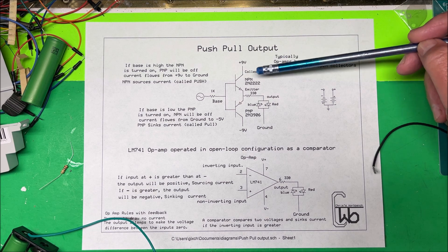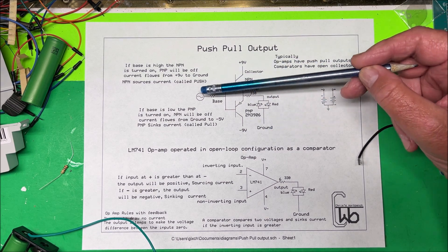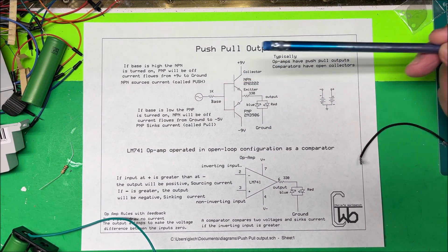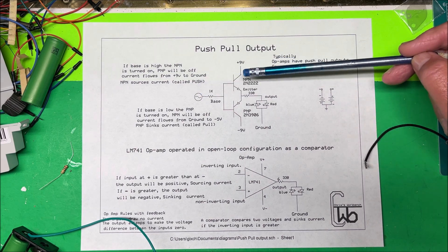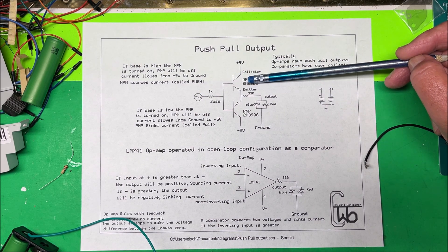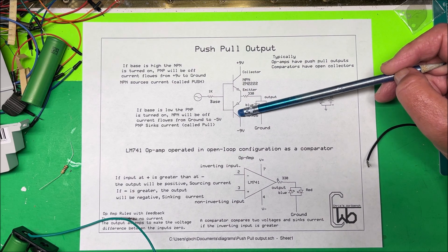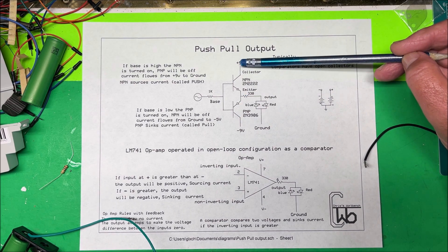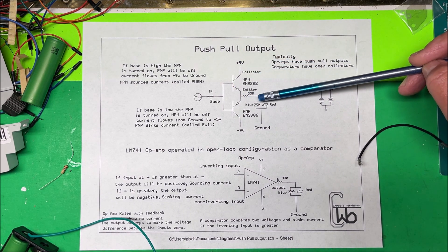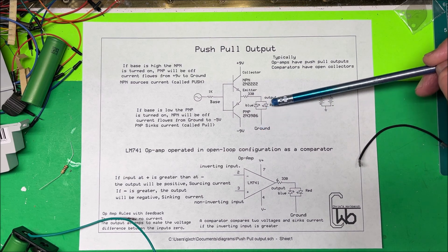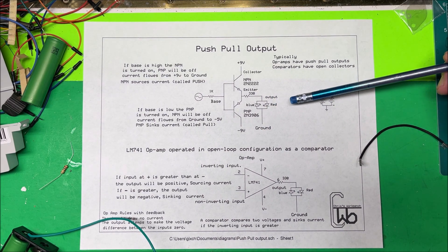So what happens here is if we take this side here and make that positive, then the NPN transistor is going to turn on and the PNP is going to be off. Then current is going to flow through the NPN out to ground out here and turn on this red LED here.